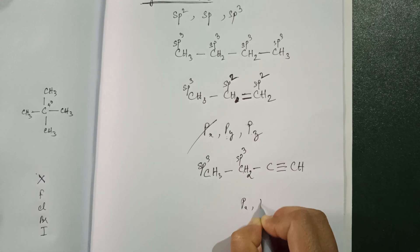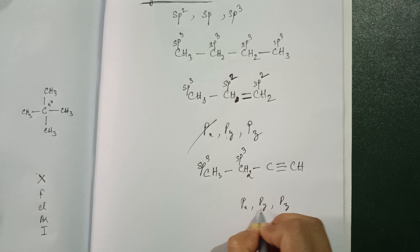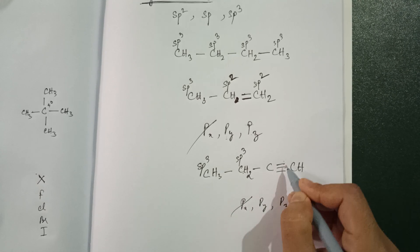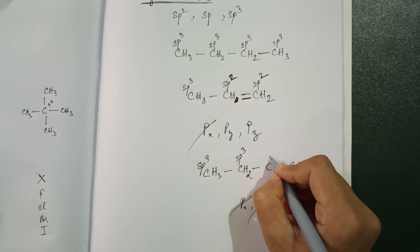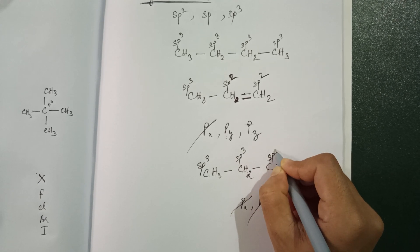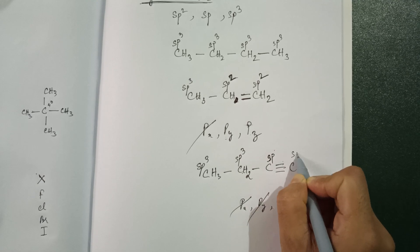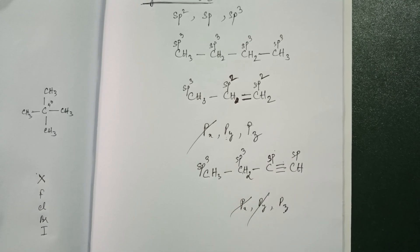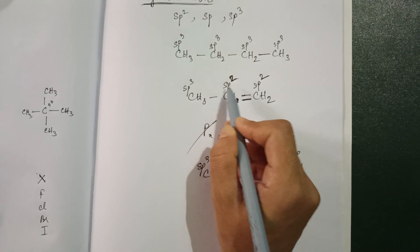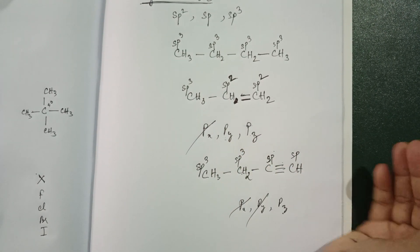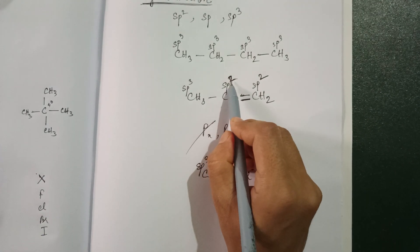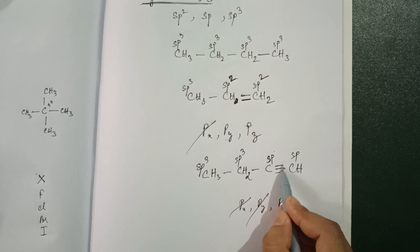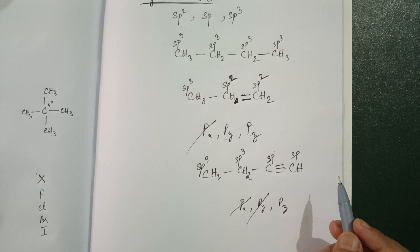For a triple bond, P has three orbitals — px, py, pz. Pi bond one uses one p, pi bond two uses another p — how many p remain? One. But we always take s, so it is sp only. Triple-bonded carbons are always sp. To remember: for a double bond, one p is used out of three, two remain — sp2. For a triple bond, two p are used out of three, one remains — sp.